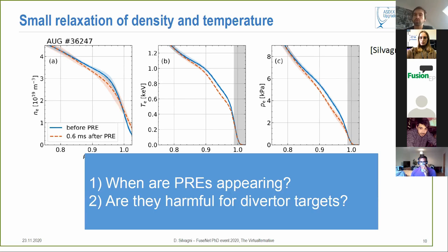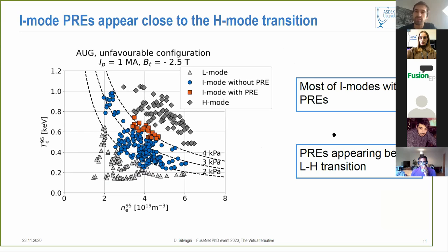This is also reflected in the pressure and then this energy goes out and reaches your divertor target. Our main research questions that I would like to ask and also answer during this talk is: when are these PREs appearing because then we can avoid them, and if they are harmful for the divertor target in a reactor-relevant scenario.